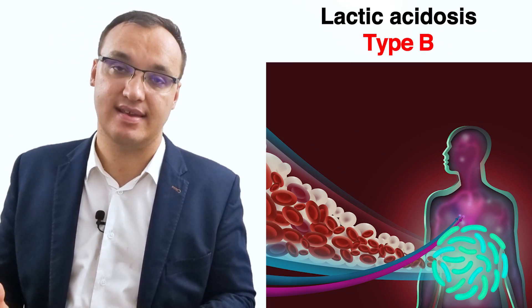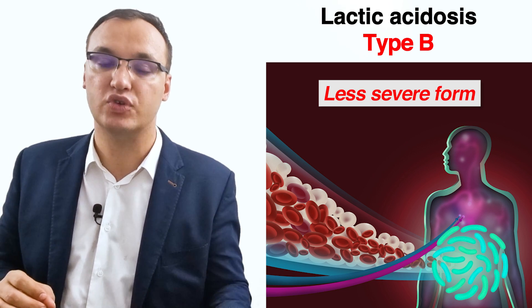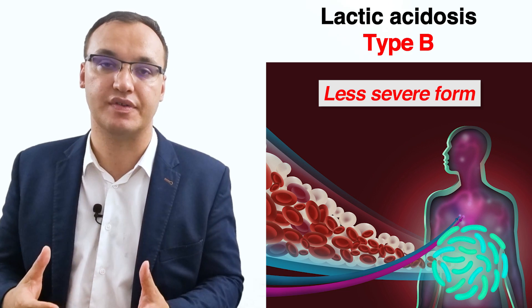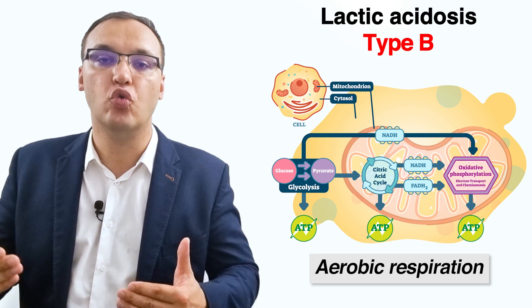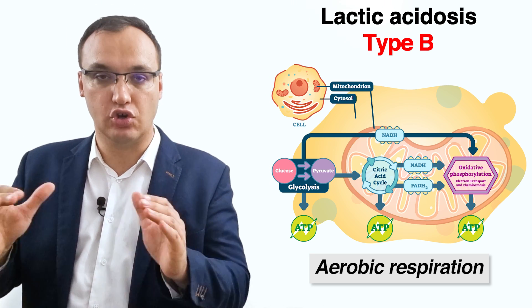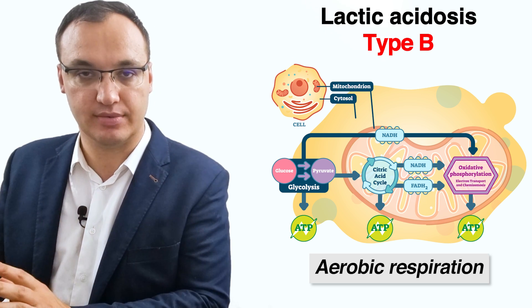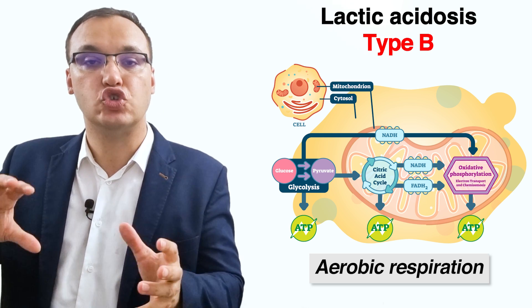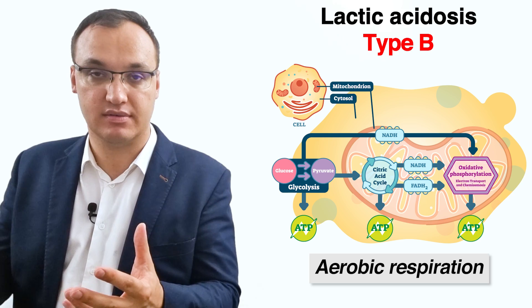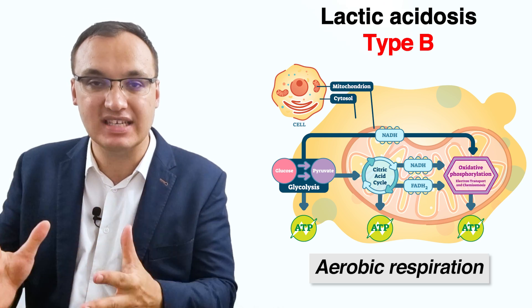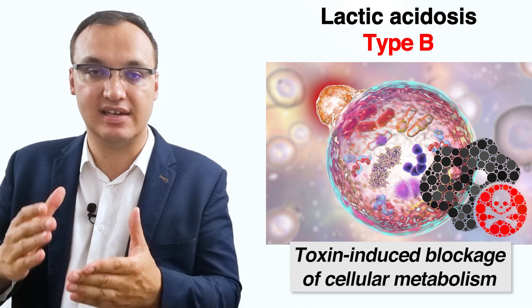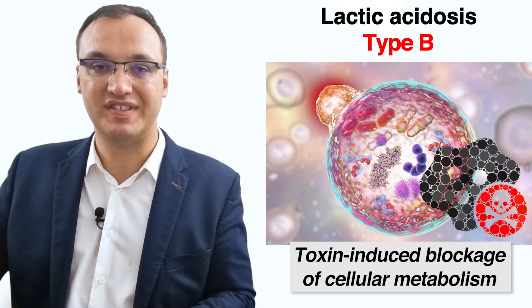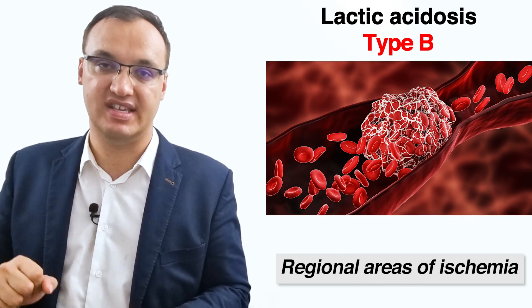Now let's focus on type B lactic acidosis. It is less severe than type A. Unlike type A, it occurs when there is normal tissue perfusion and normal aerobic respiration — so glucose and oxygen are used to produce energy. However, another problem causes the production of lactic acidosis, since evidence of systemic hypoperfusion is not apparent. The mechanisms involved include toxin-induced blockage of cellular metabolism and regional areas of ischemia.